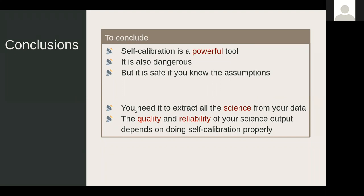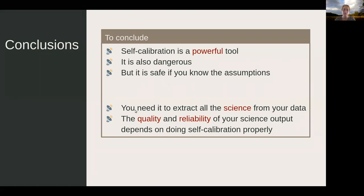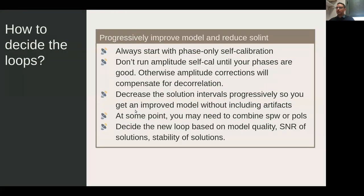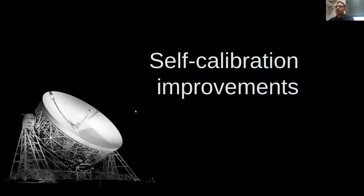You can clear the model column with the task clearcal, and you can also clear the corrected column if needed. Regarding amplitude variation of gain solutions: there is no strict restriction, but from a standard calibration the amplitude solutions should be close to 1 — deviations of 10 to 20 percent are normal, but not much more. If there are outliers, they should be flagged.